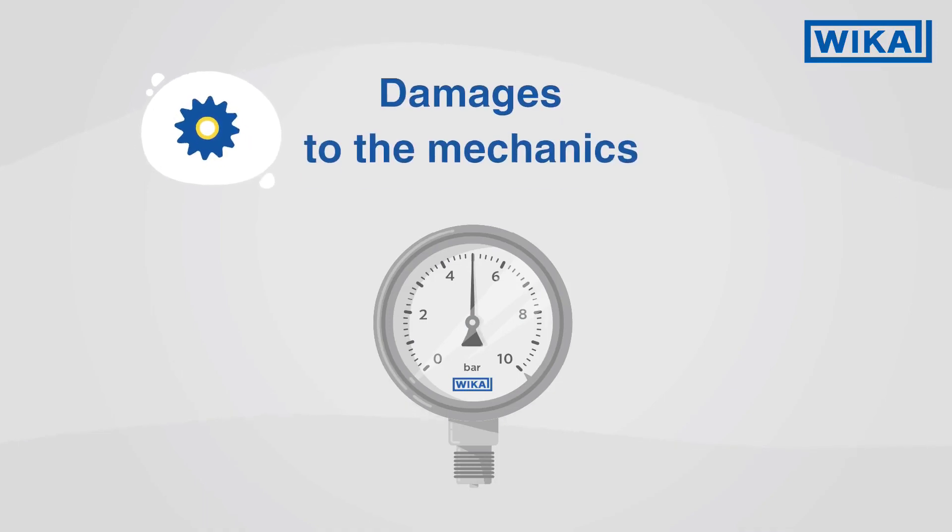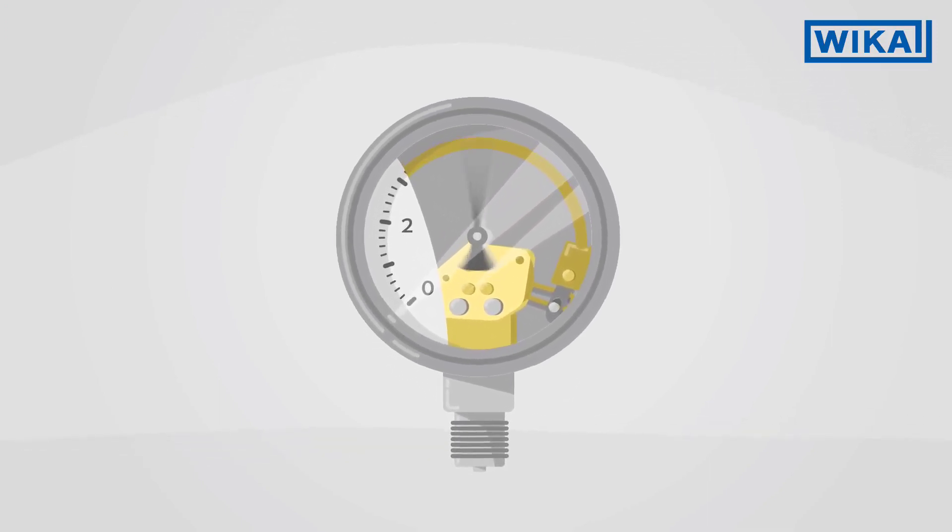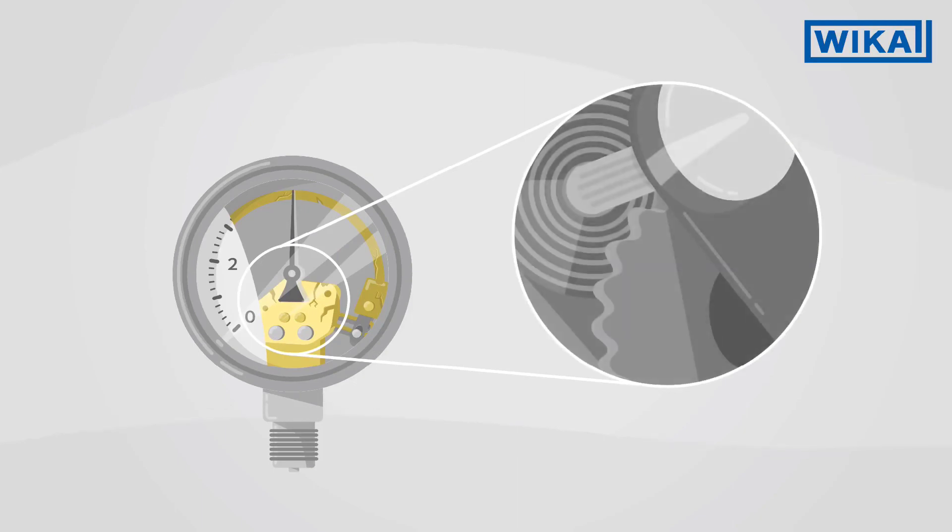Damages to the mechanics. Strong vibrations on the instrument not only cause pointer flutter, but also cause permanent damage to the mechanics. This considerably reduces the service life of the pressure gauge.